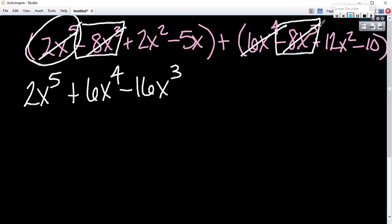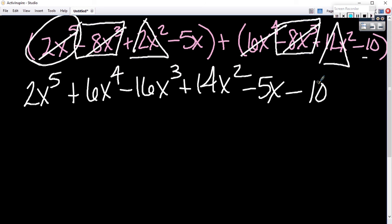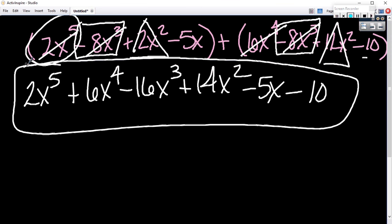Powers of 2. I have a 2 and I have a 12 and that would give me 14x squared. How about powers of 1? So it's minus 5x minus 10. That's the answer. This one was minus 5x. That's the answer. That's easy.